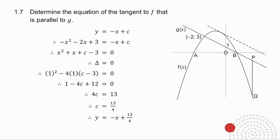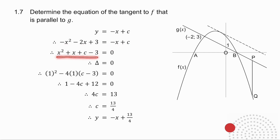Question 1.7 asks you to determine the equation of the tangent to the graph of f that is parallel to g. Lines that are parallel have the same gradient, so the tangent is y equals minus x plus c. The two graphs are touching, so I make the two equations equal and get it into standard form. A quadratic has two solutions, but because it's a tangent there's only one solution. So delta must equal zero — delta is b squared minus 4ac. I substitute in, solve, and get the equation of the tangent to the parabola.